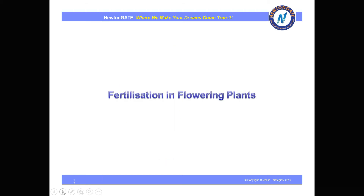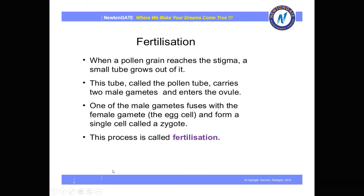Now we will discuss fertilization in flowering plants. We have seen how microsporogenesis and megasporogenesis happen. When a pollen grain reaches the stigma, a small tube called the pollen tube grows out of it. The pollen tube carries two male gametes and enters the ovule. One of the male gametes fuses with the female gamete and forms a single cell called a zygote — this entire process is termed fertilization.